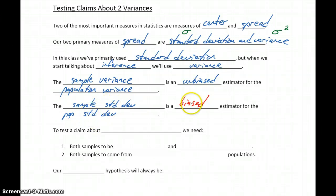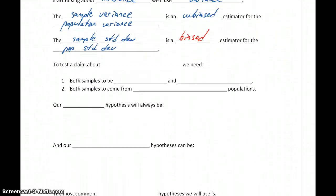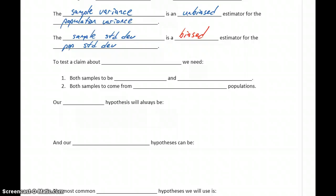Since it's a biased estimator, it introduces the potential for more error into our results. So in short, variance is a better choice once we start talking about statistical inference.